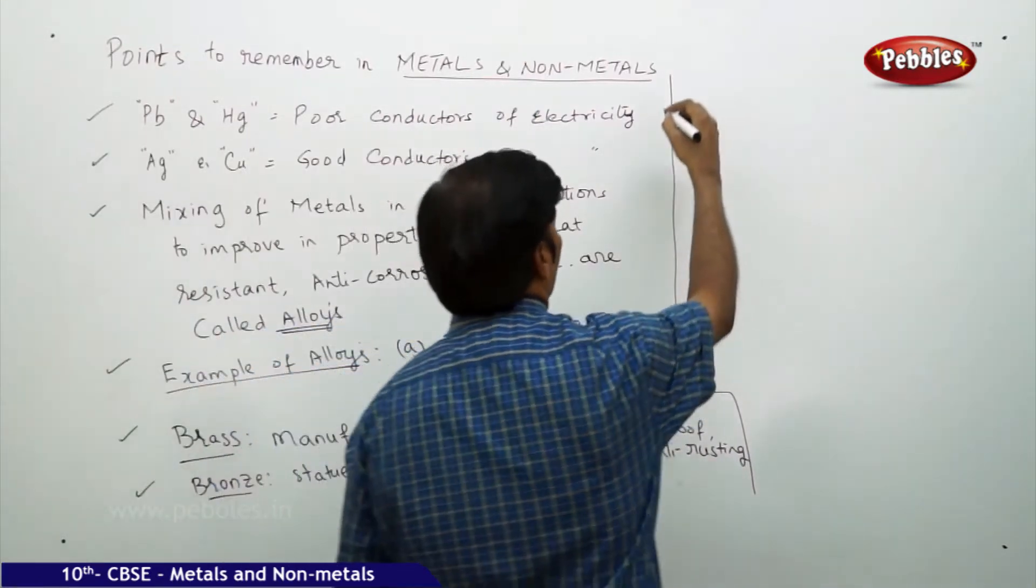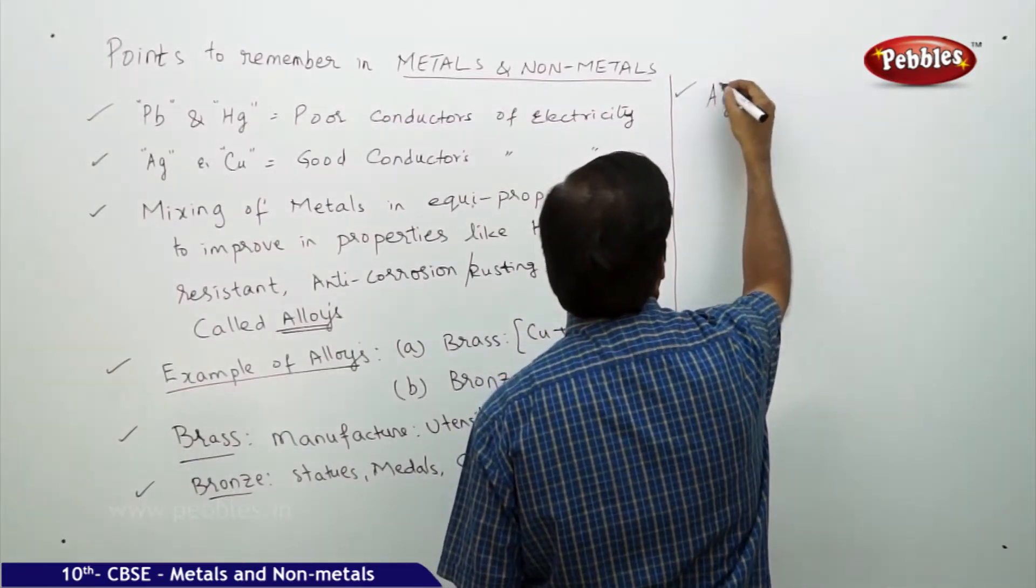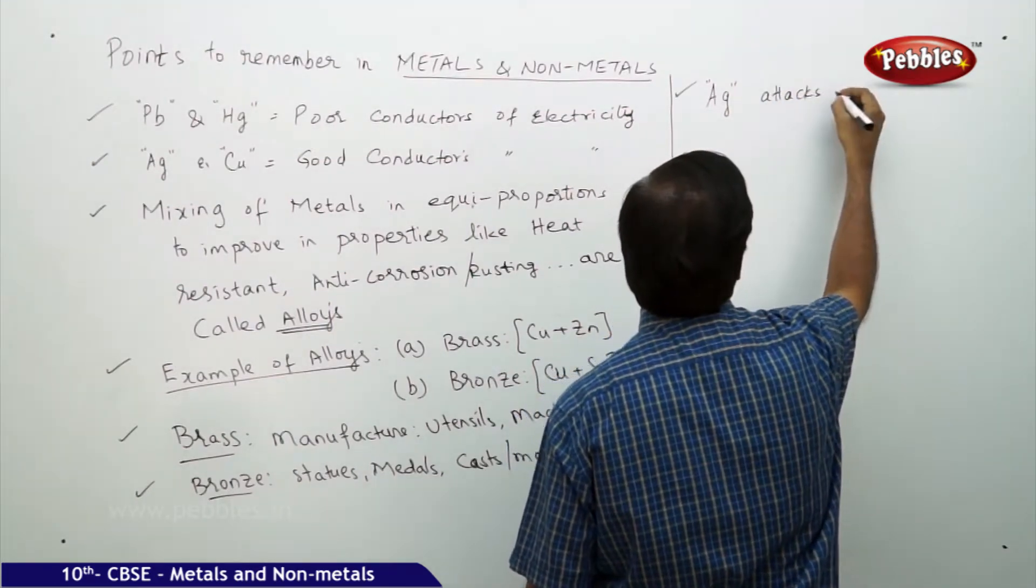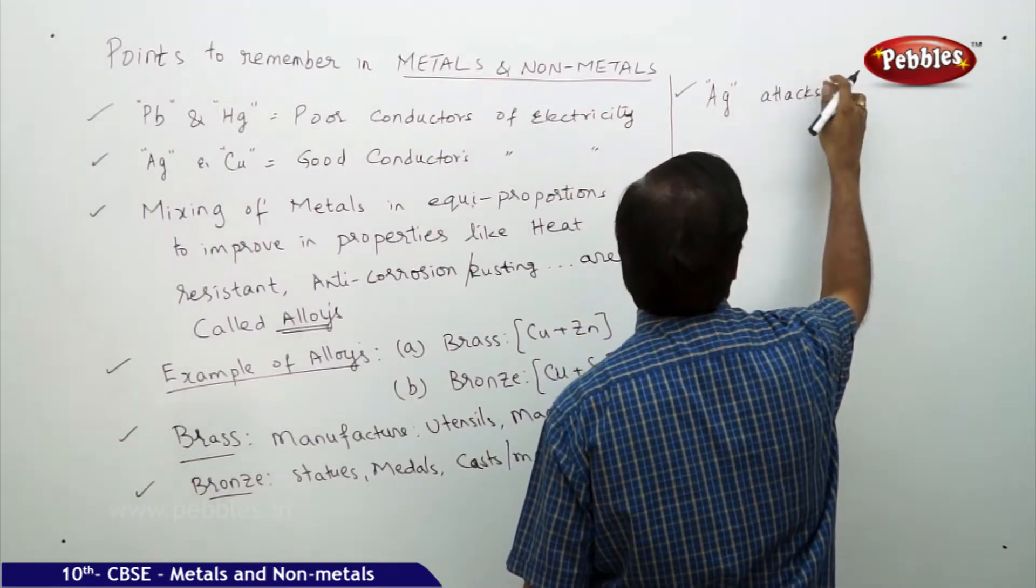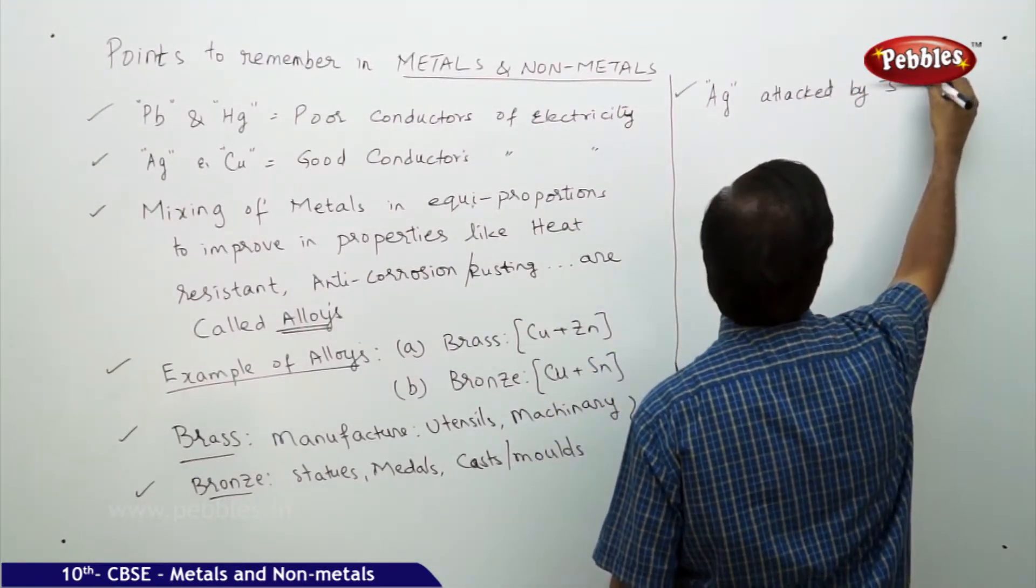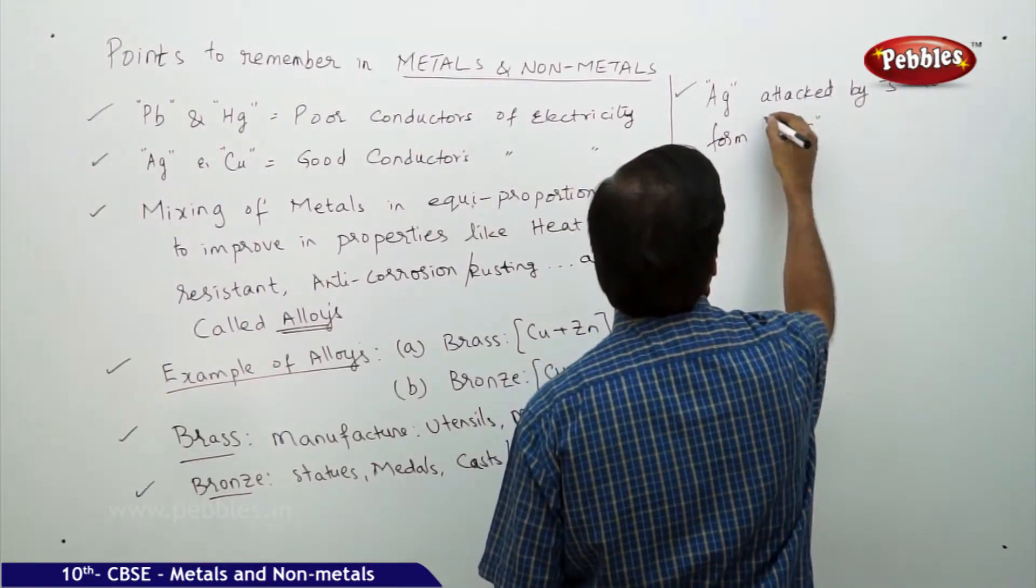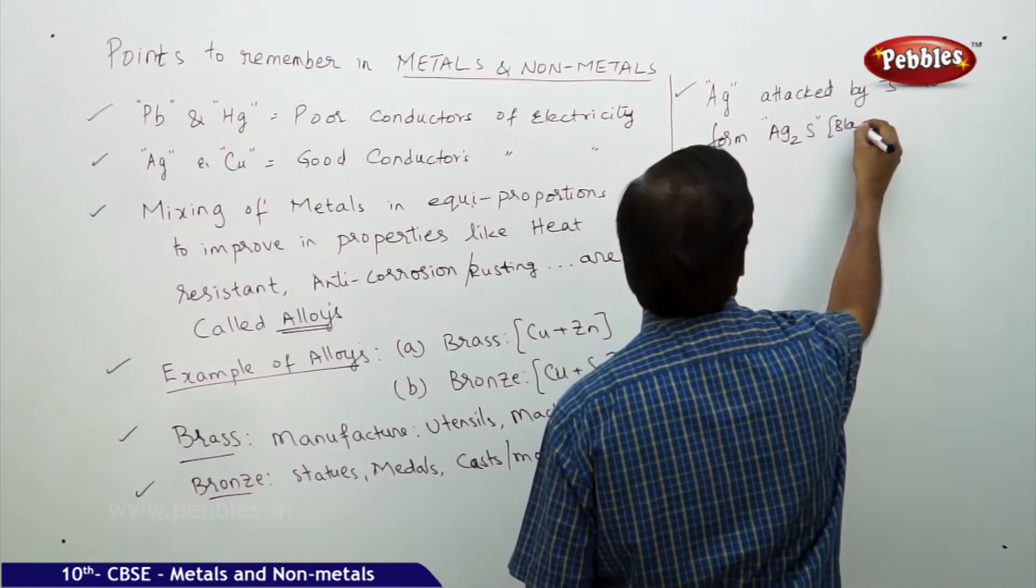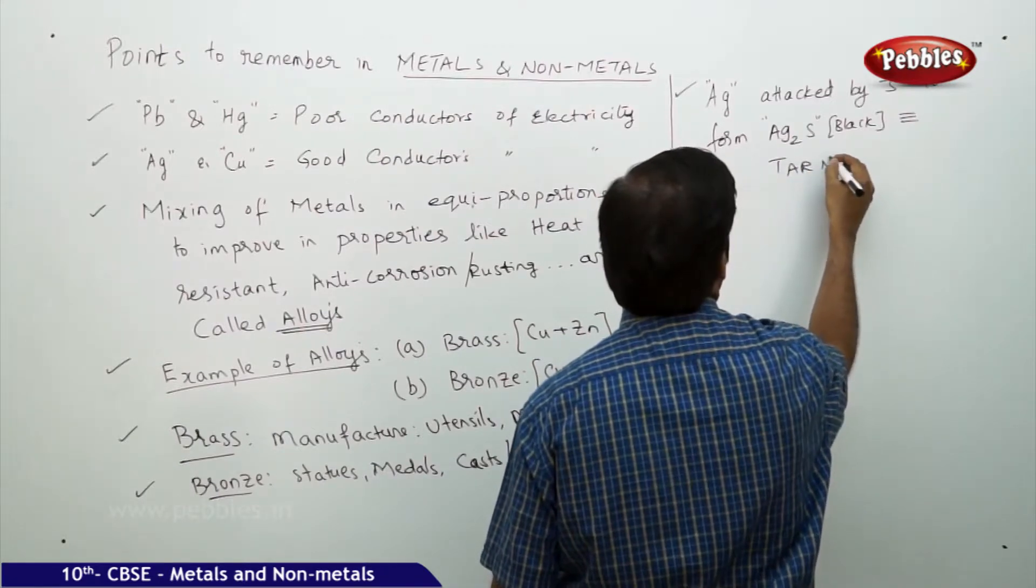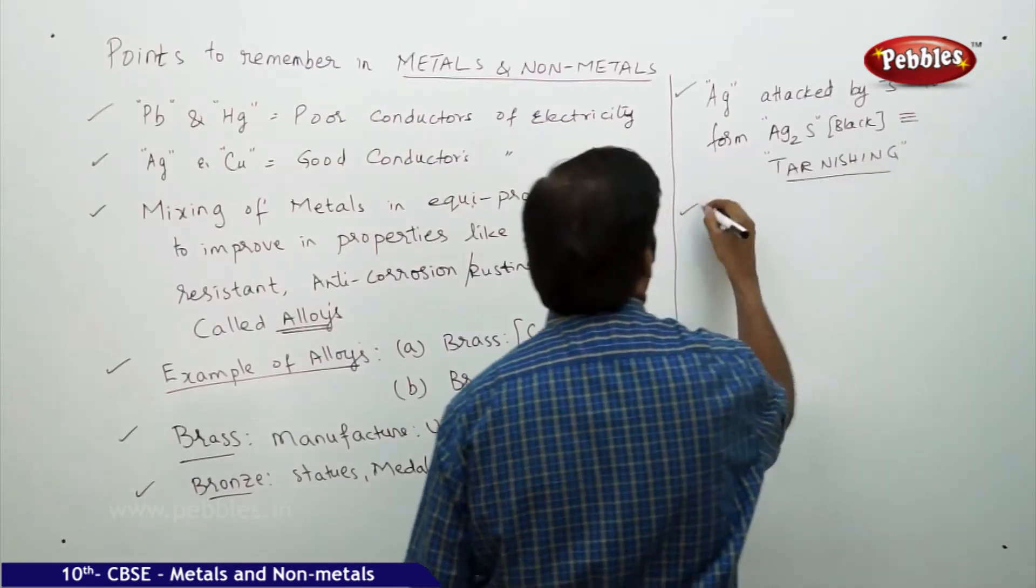Silver is attacked by sulfur to form Ag2S, which is black in color, which we call tarnishing.